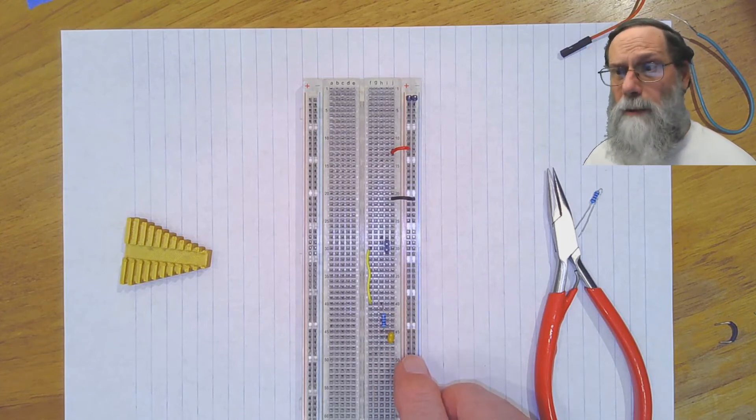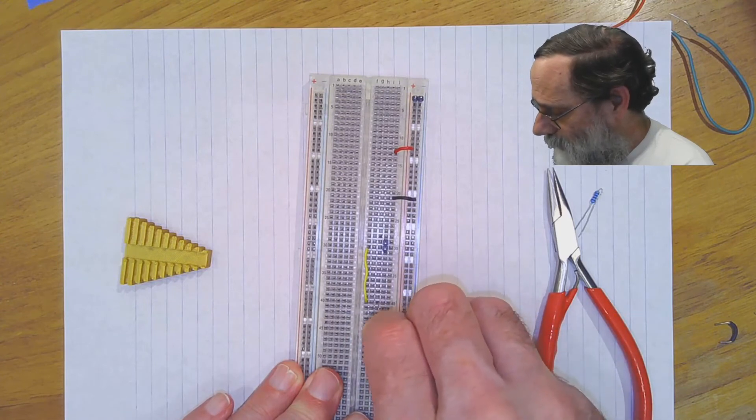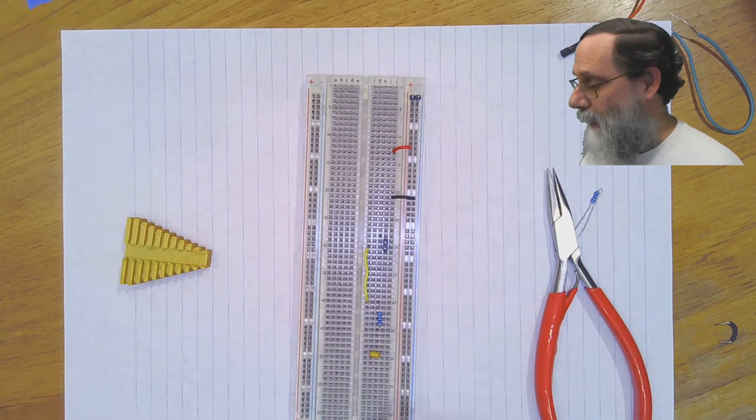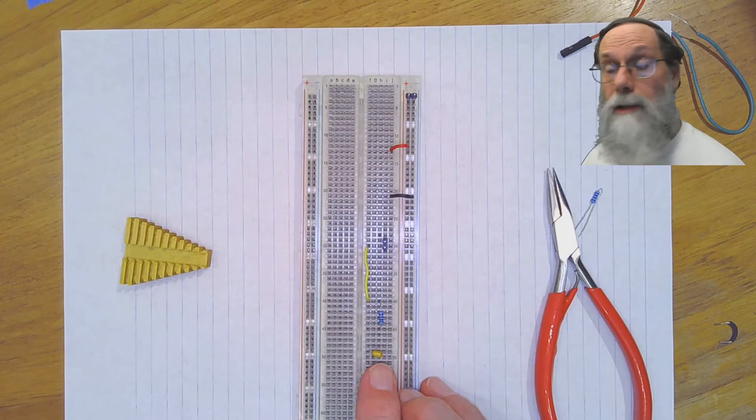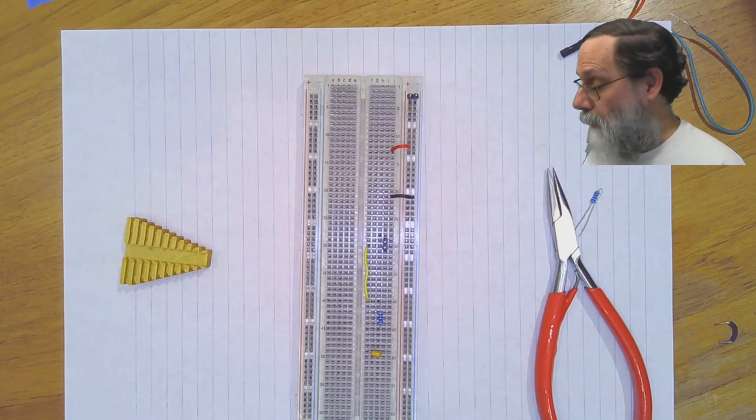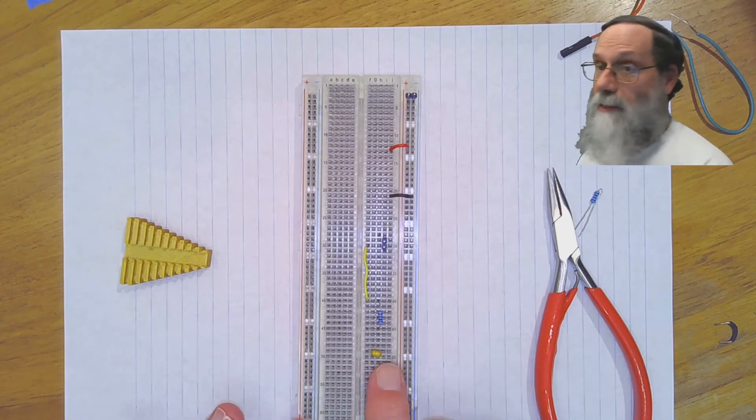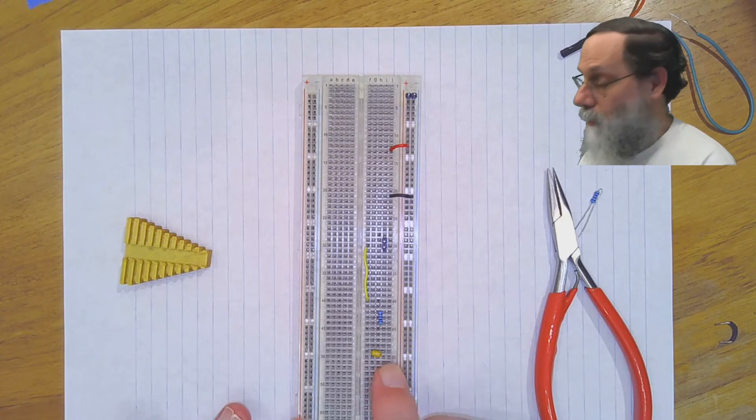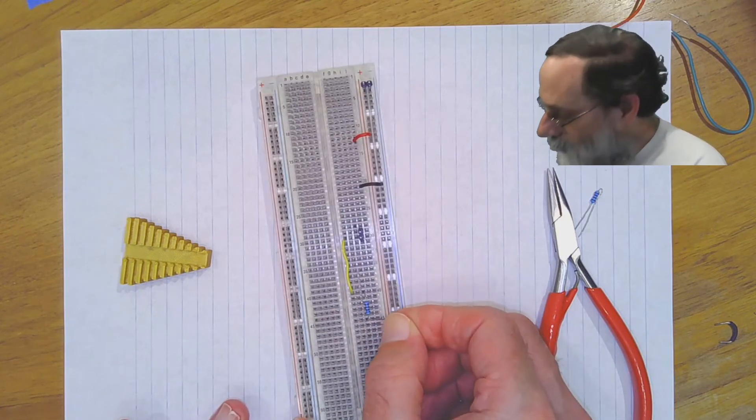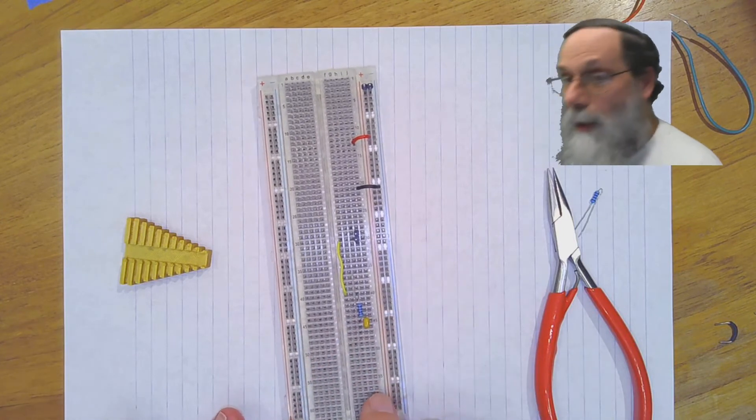One thing that a lot of students make mistakes on is that they try to put in components horizontally. That capacitor isn't doing a thing because its two ends are short-circuited. They're both connected to the same row. Everything on that row is connected together inside the breadboard. So that capacitor isn't doing anything, it's just short-circuited.